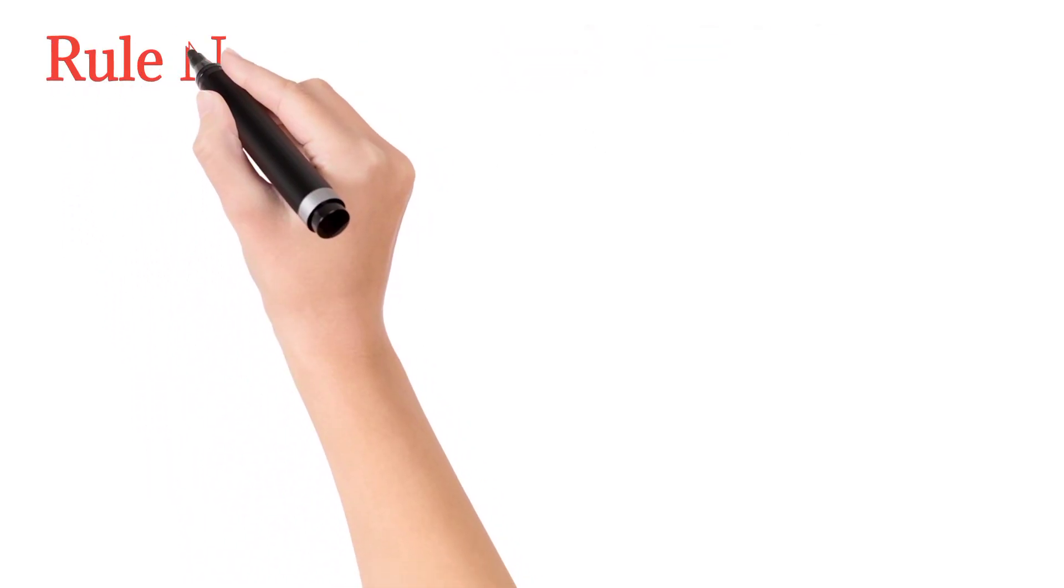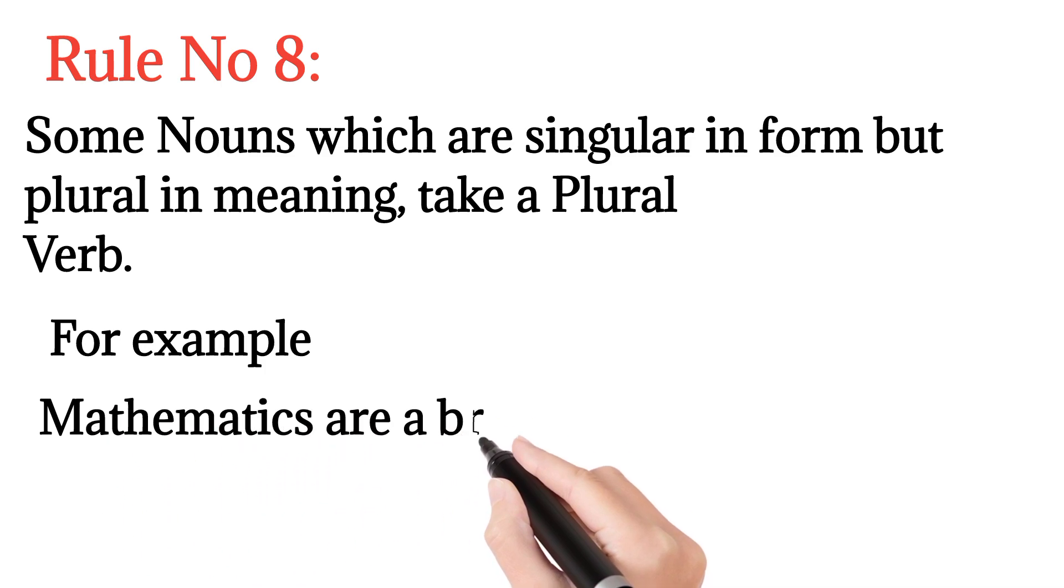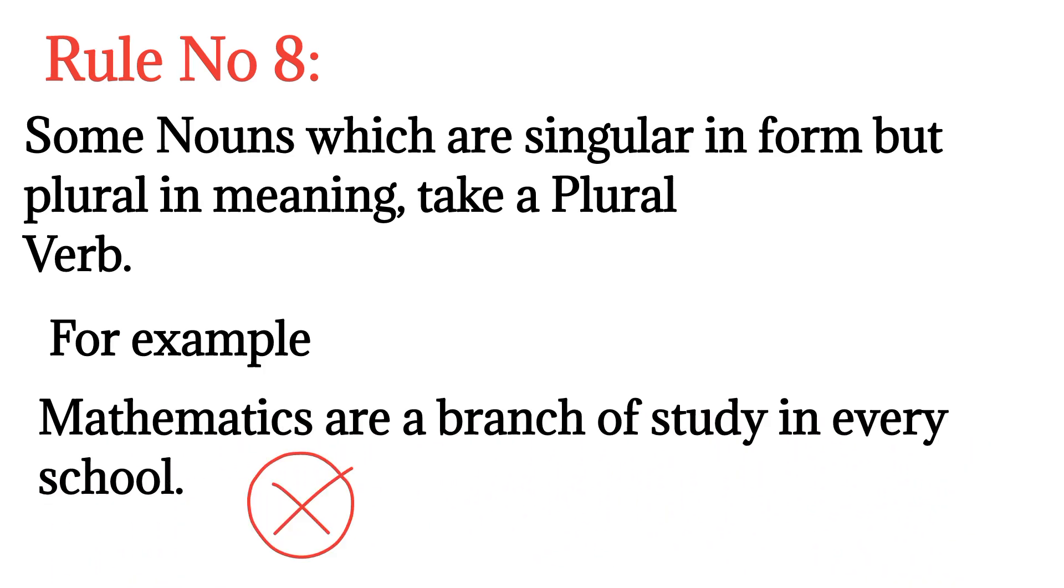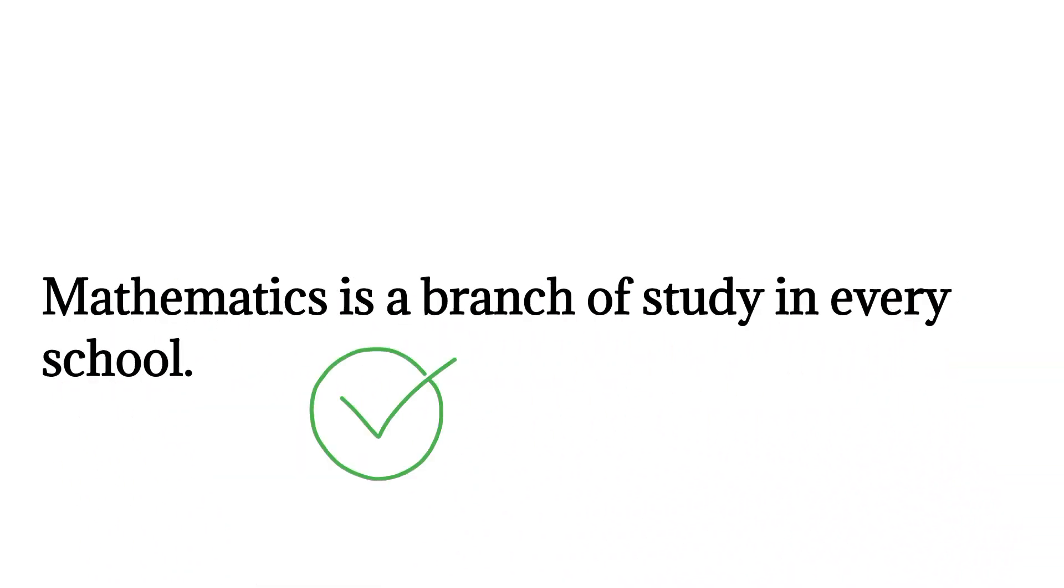Rule number eight: Some nouns which are singular in form but plural in meaning take a plural verb. For example, 'mathematics are a branch of study in every school' - the correct form of this sentence is 'mathematics is a branch of study in every school'.